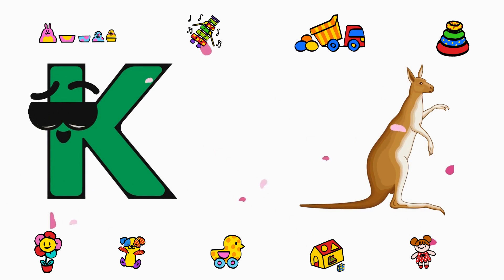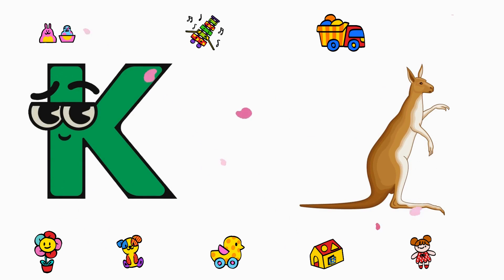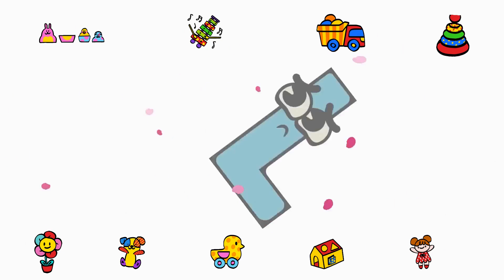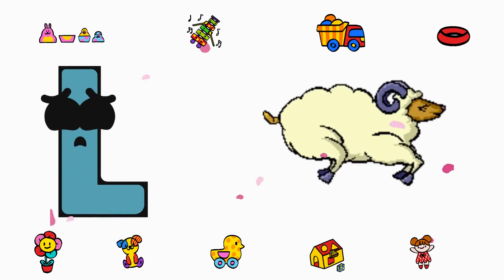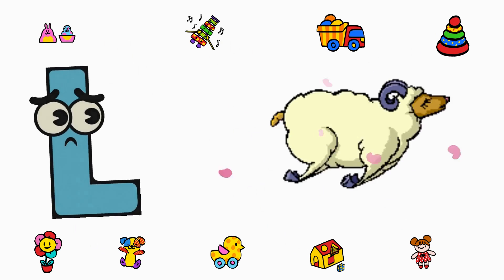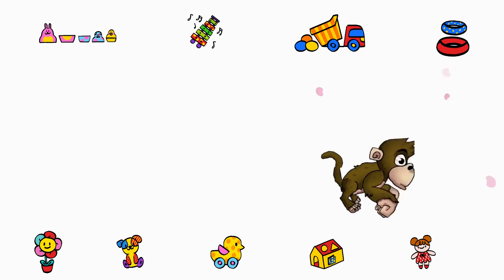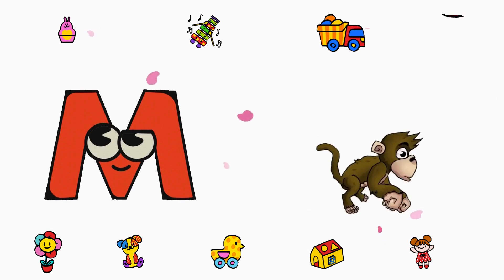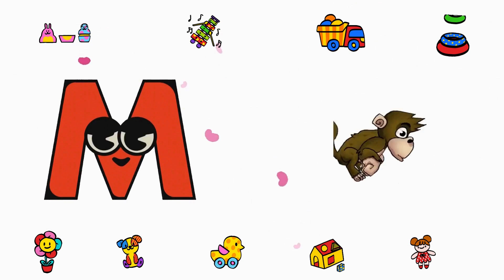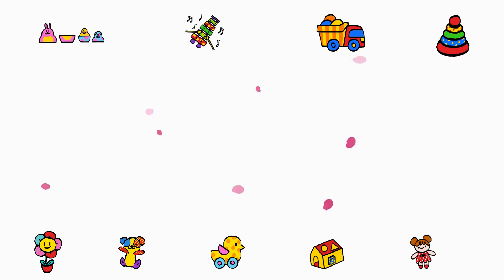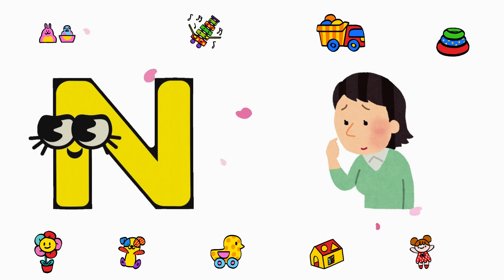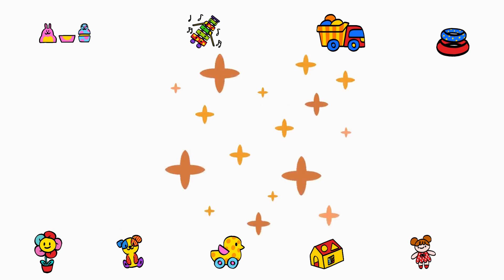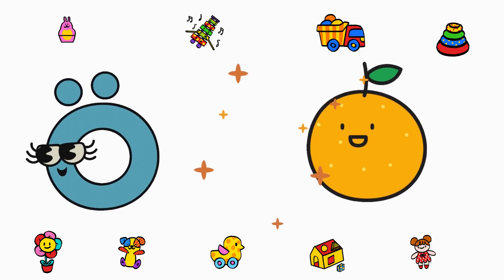K is for Kangaroo. L is for Lamb. M is for Monkey. N is for Nose. O is for Orange.